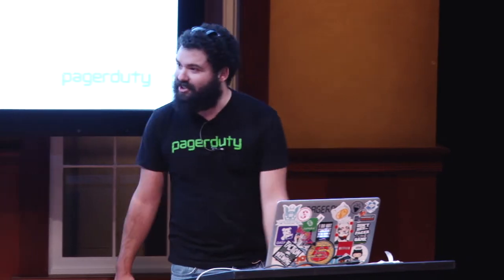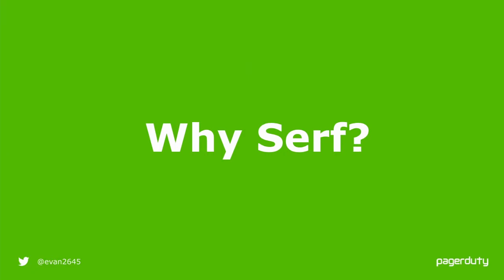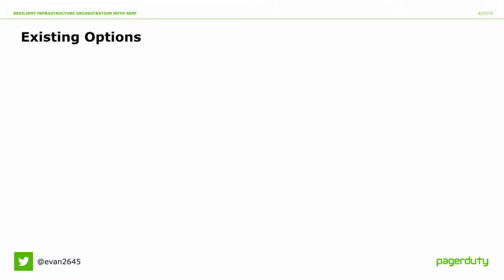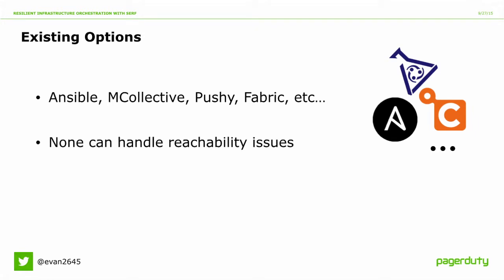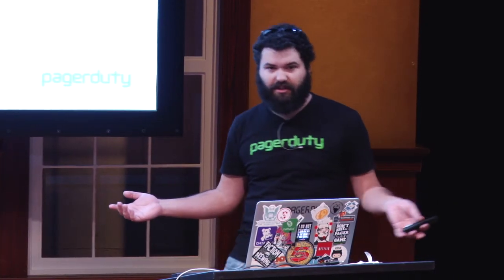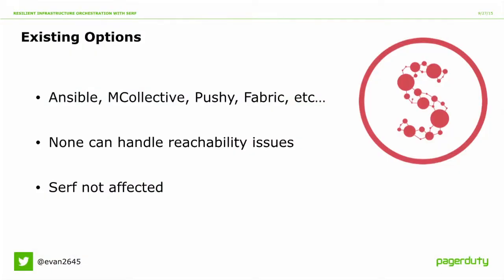Why SERF? We're really looking for general purpose orchestration. There are lots of existing options — Ansible, mCollective, Pushy, Fabric, and loads of other tools. We use several of them, in fact. But none of them 100% solve our use case, and more importantly, none of them can handle the reachability problems. None of these solutions use a command dispatch protocol resilient to these problems. Luckily we're familiar with a protocol that is resilient — that's SERF. SERF is not affected by any of these problems, mostly because it uses gossip. Gossip is infectious and works around the weird network issues we see.